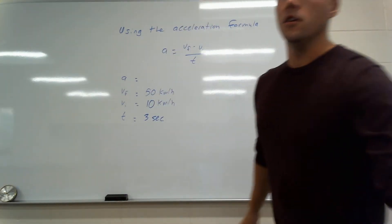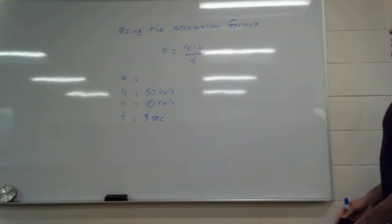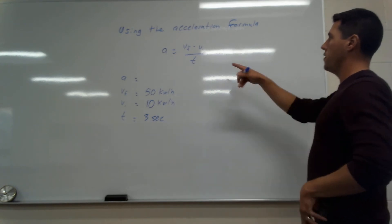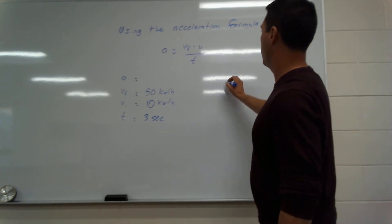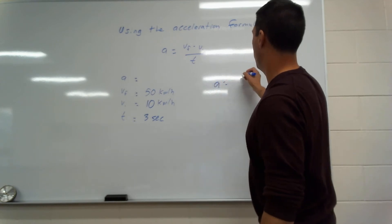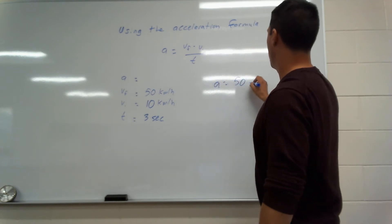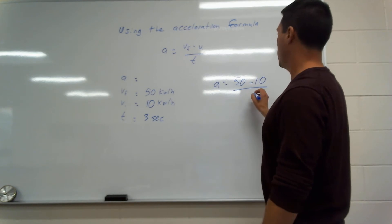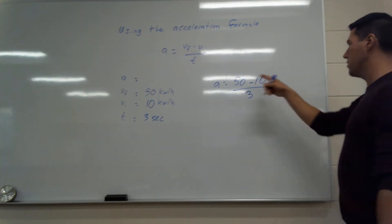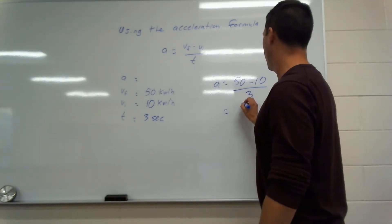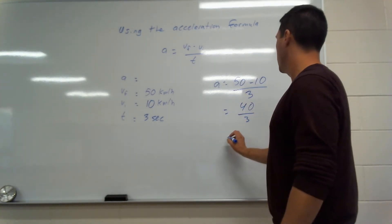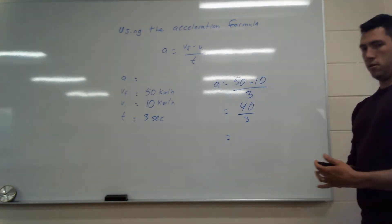It took this car three seconds to do that, so t equals 3 seconds. Plugging into the formula: acceleration equals vf minus vi over t, which gives us 50 minus 10, all over 3. That's 40 divided by 3.